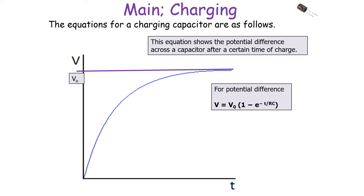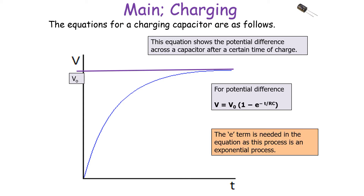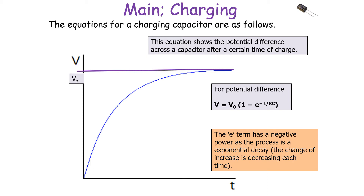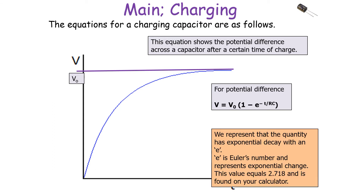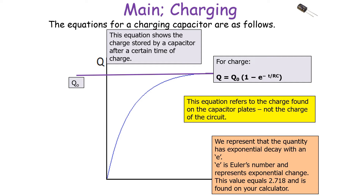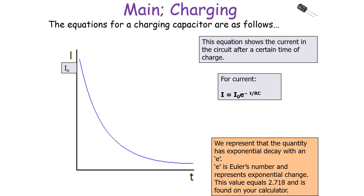The equation is: V equals V0 times by (1 minus E to the power minus T over RC). The E term is needed as it's an exponential process, because the change of increase is decreasing at the same rate each time. E is called Euler's number, representing exponential change, and equals 2.718 — found on your calculator. Similarly, for charge: Q equals Q0 times by (1 minus E to the power minus T over RC), where the equation refers to charge on the capacitor plates, not the circuit charge. For current: I equals I0 times E to the minus T over RC.